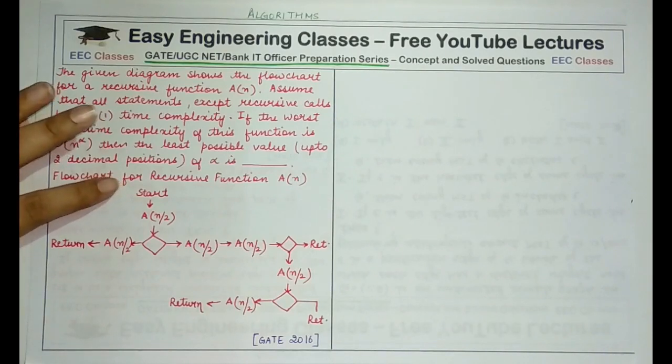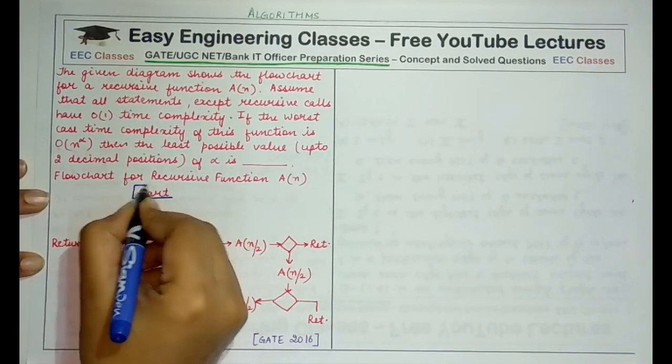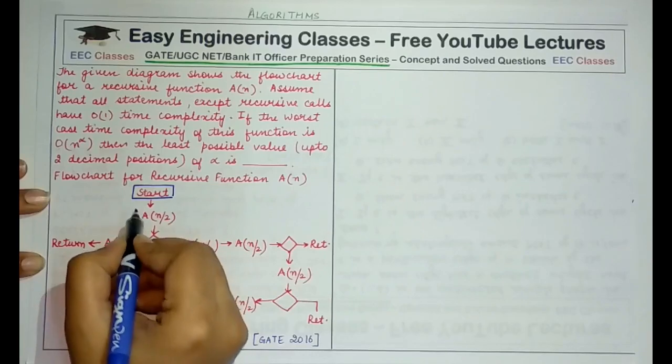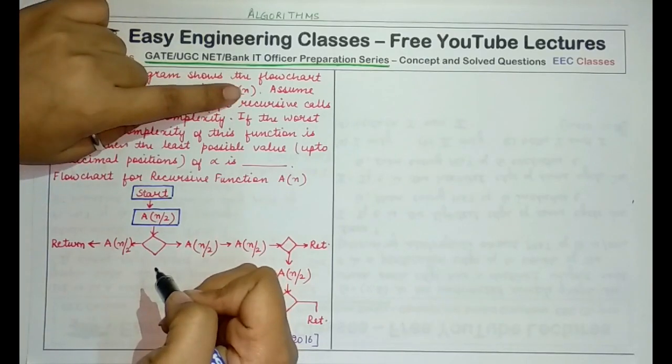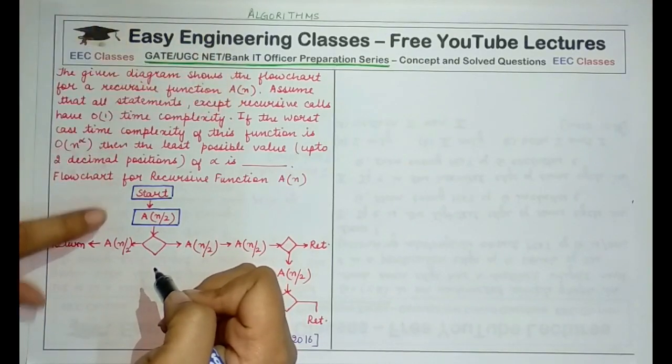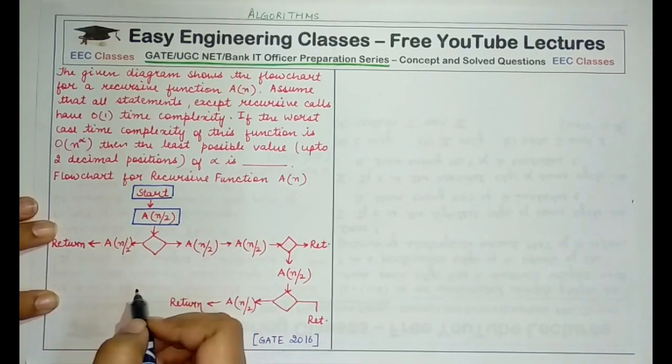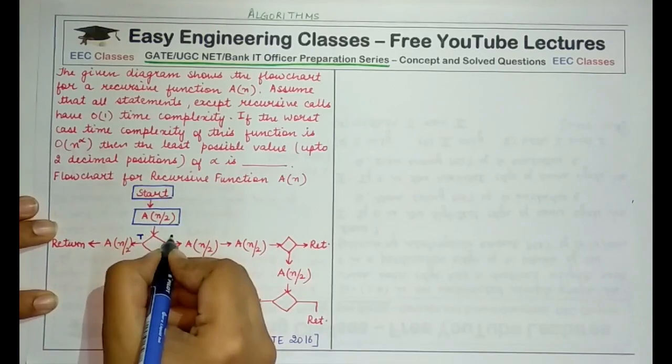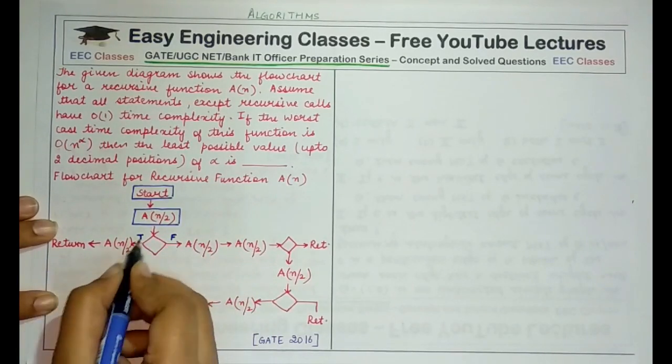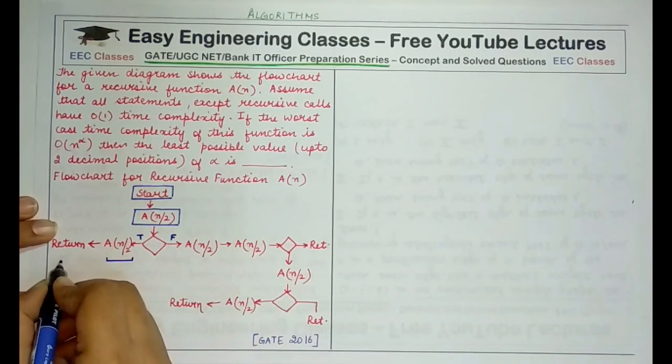Now the function initially has a start node, then there is a recursive call to A(n/2). That means if initially the parameter was n or the size of the problem was n, then there is a recursive call to the same problem with size n/2, and then there is a decision node. If suppose the decision is true, then we will again execute one recursive call and then return.